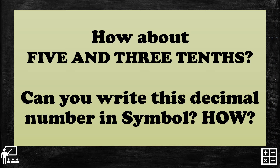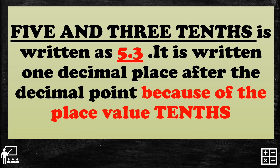How about 'five and three tenths' — can you write this decimal number in symbol? Five and three tenths is written as five point three. It is written with one decimal place after the decimal point because of the place value tenths. We have 'and' here because we have a whole number part. The place value of three is tenths, so our answer is five point three.